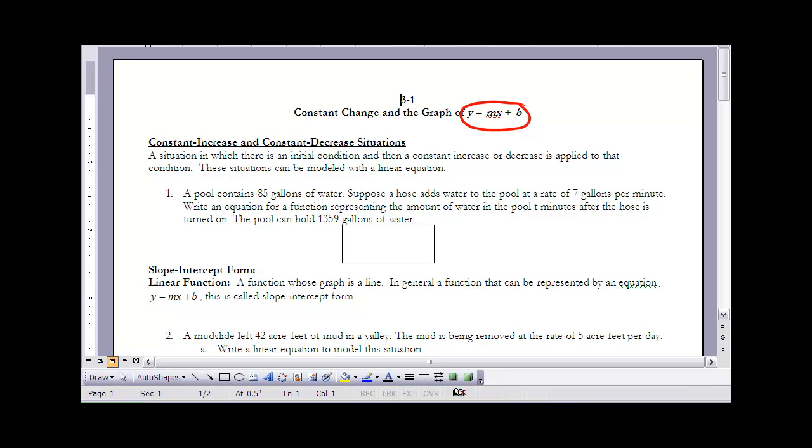All linear equations model constant increase or constant decrease situations. So a situation in which there's an initial condition or a starting point. That initial condition or starting point is really that b value. And then there's a constant increase or decrease, that constant increase or decrease is the slope of that line. These situations can be modeled using linear equations, and the easiest way to model them is to write them right away in the y equals mx plus b form.